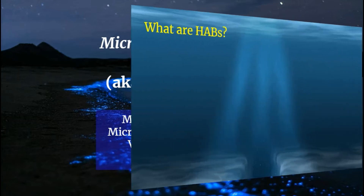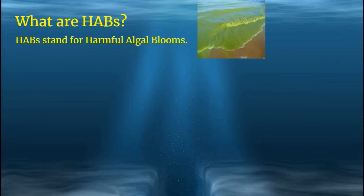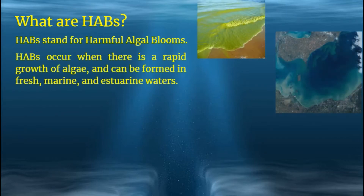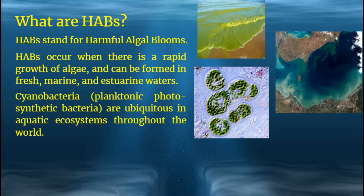So what are HABs to start out with? HABs stand for harmful algal blooms. HABs occur when there is a rapid growth of algae and can be formed in fresh, marine, and estuarine waters. Cyanobacteria are planktonic photosynthetic bacteria — hence the prefix cyano because they are photosynthetic — and they are ubiquitous in aquatic ecosystems throughout the world.